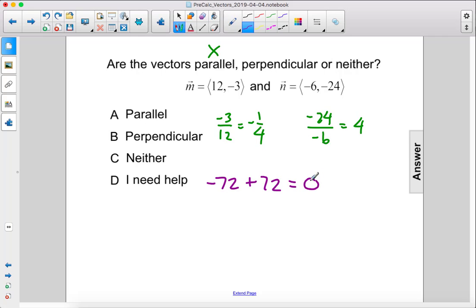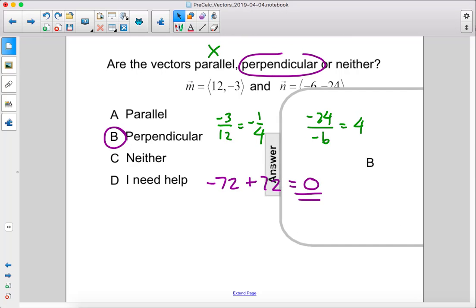And look, those do add up to zero. Therefore, the vectors are perpendicular. The answer is B.